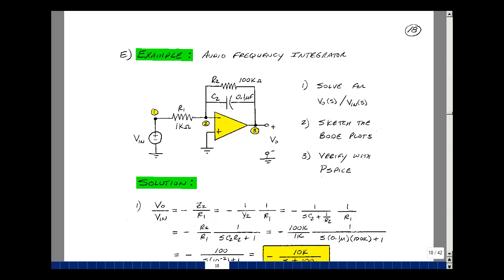This lesson deals with an audio frequency integrator example. You can find these notes in the ECE202E book in Chapter 12, starting on page 18. Let's take the integrator that we stabilized in supplemental problem 11.2 and solve for V out of S over V in of S. Let's then sketch the Bode plots and verify it with PSPICE.